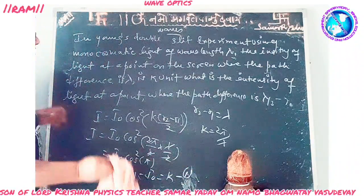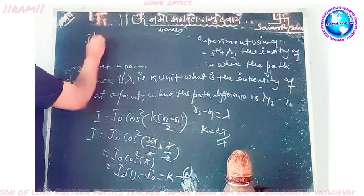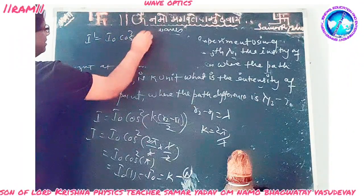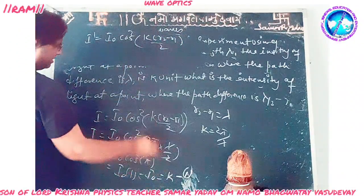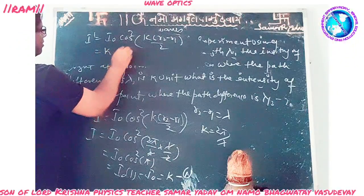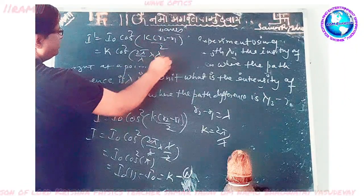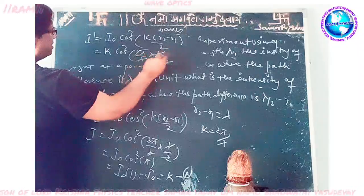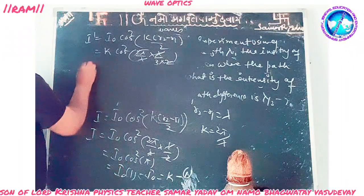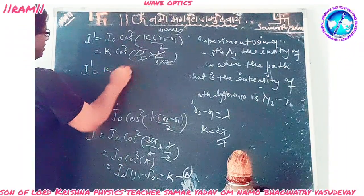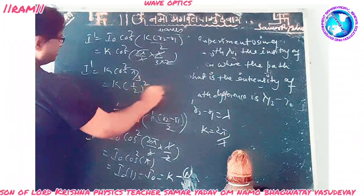Now for the path difference lambda by 3, the intensity i dash is given by i0 cos squared of k(r2 minus r1) upon 2. Here i0 equals K, so we get K into cos squared of (2pi/lambda into lambda/3 into 1/2). The 2s and lambdas cancel, giving i dash equals K into cos squared (pi by 3). Since cos(pi/3) equals 1/2, cos squared is 1/4, so i dash equals K upon 4.